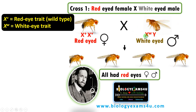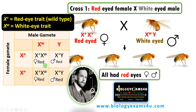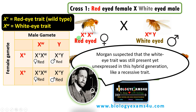Let us draw the Punnett square. The female gametes are X⁺ and X⁺; the male gametes are X^W and Y. The offspring are X⁺X^W, X⁺Y, X⁺X^W, and X⁺Y — all red-eyed. Morgan suspected that white-eyed trait is recessive, just as Mendel proposed, so it is unexpressed in the F1 generation. He wanted to confirm whether white-eyed was indeed a recessive trait.